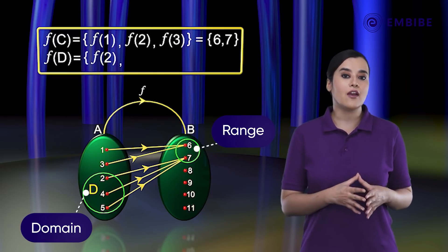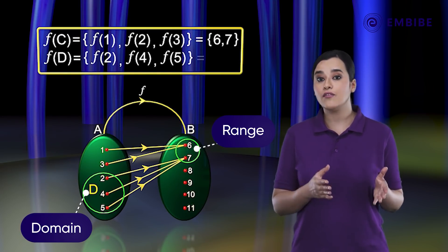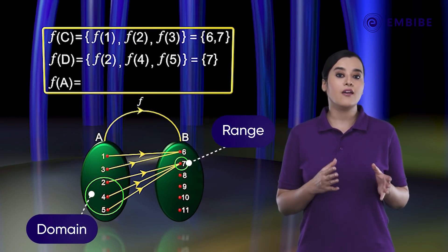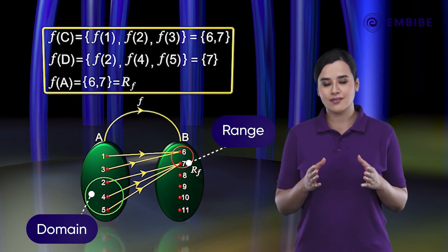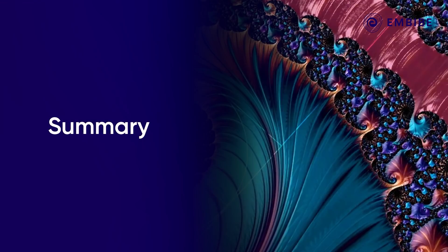f(D) = {f(2), f(4), f(5)} = {7}. Therefore, f(A) = {6, 7} = r_f. Let us summarize what we learned in this video.